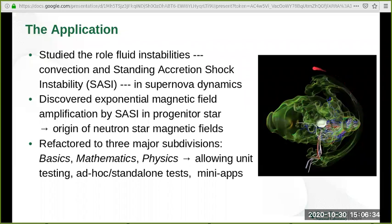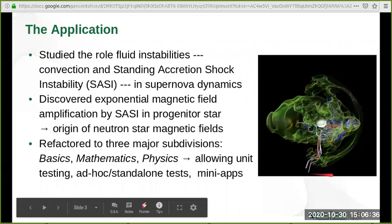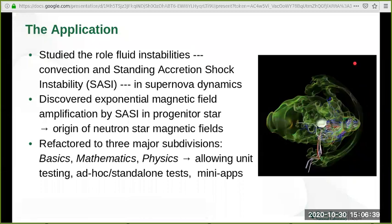On the right, here is a visualization of magnetic field during a core-collapse supernova event. Recently, we refactored Genesis into three major subdivisions: